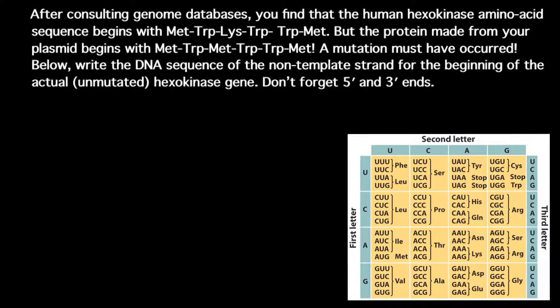Hello and welcome to Nikolai's genetics lessons. Today's problem is: after consulting genome databases, you find that the human hexokinase amino acid sequence begins with a given sequence, but the protein made from your plasmid begins with a different sequence. A mutation must have occurred. Write the DNA sequence of the non-template strand for the beginning of the actual unmutated hexokinase gene, and don't forget the 5' and 3' ends.